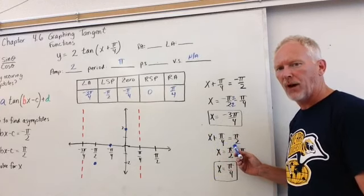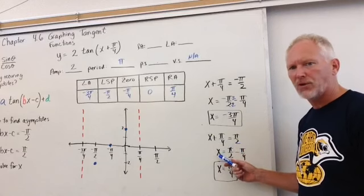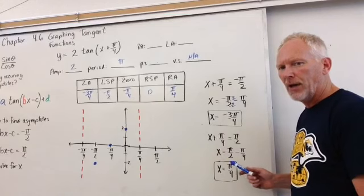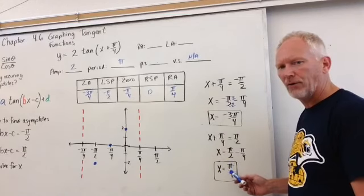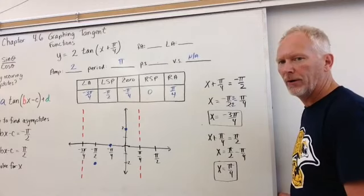The next one we have is x plus pi over 4 equals positive pi over 2. We subtract pi over 4 from both sides. We get x equals pi over 2 minus pi over 4. And if we subtract 45 degrees from 90, then we get x equal pi over 4.